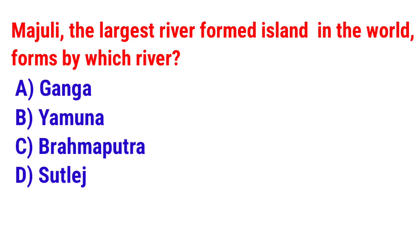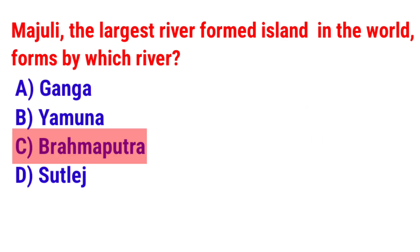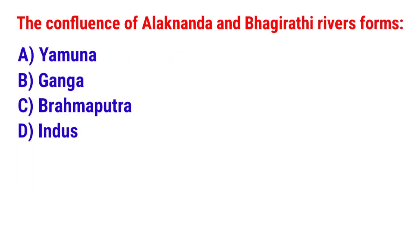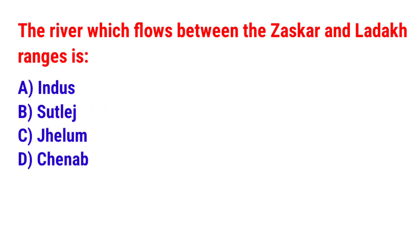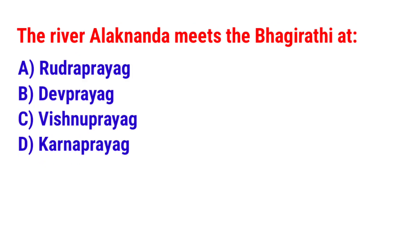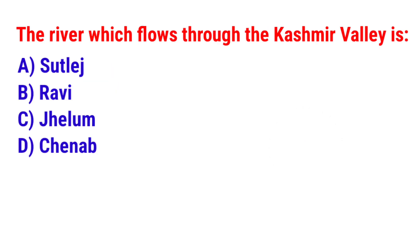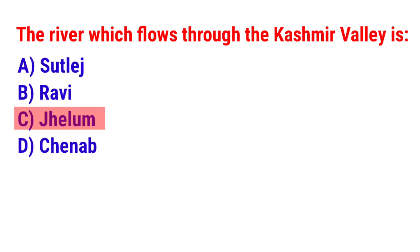Question 36: Majuli Island, the largest river-formed island in the world, is formed by which river? The answer is option C — Brahmaputra. Question 37: The confluence of Alaknanda and Bhagirathi rivers forms? The answer is option B — Ganga. Question 38: The river which flows between the Zanskar and Ladakh ranges is? The answer is option A — Indus. Question 39: The river Alaknanda meets the Bhagirathi at? The answer is option B — Dev Prayag. Question 40: The river which flows through the Kashmir valley is? The answer is option C — Jhelum River.